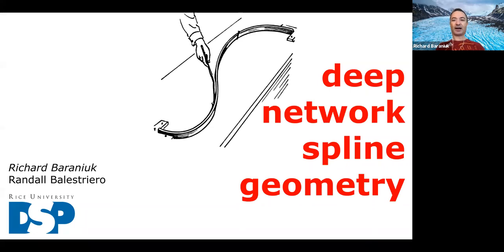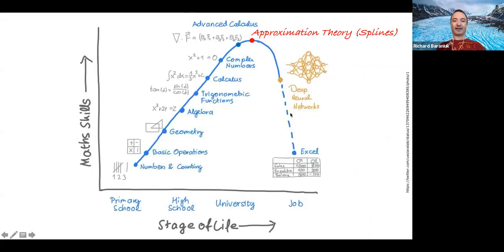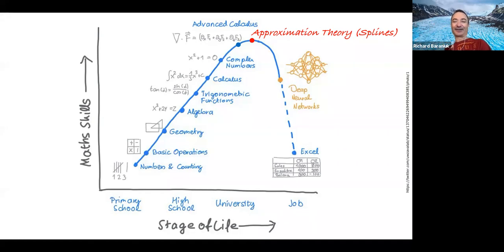Hopefully there'll be something in this talk for everybody. To summarize in one slide: there has been tremendous growth over the ages of mathematical development and expertise. One might argue it reached its peak with the development of approximation theory over the last decades. The idea today is to look at how ideas from approximation theory, and in particular spline functions, can impact our understanding of deep networks.